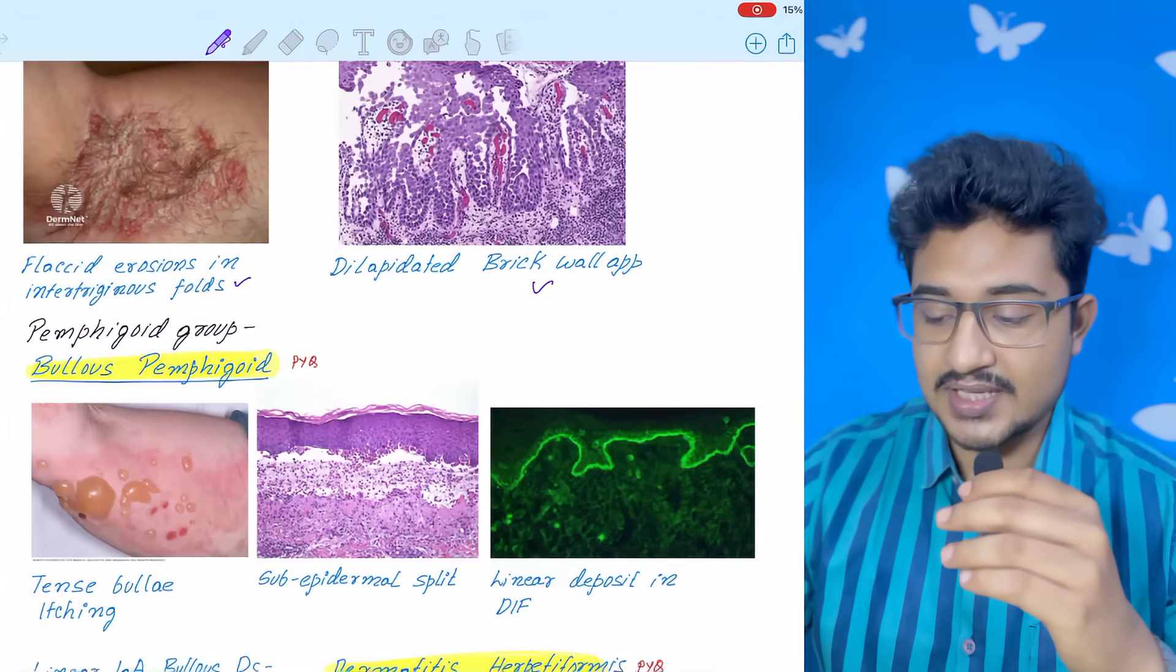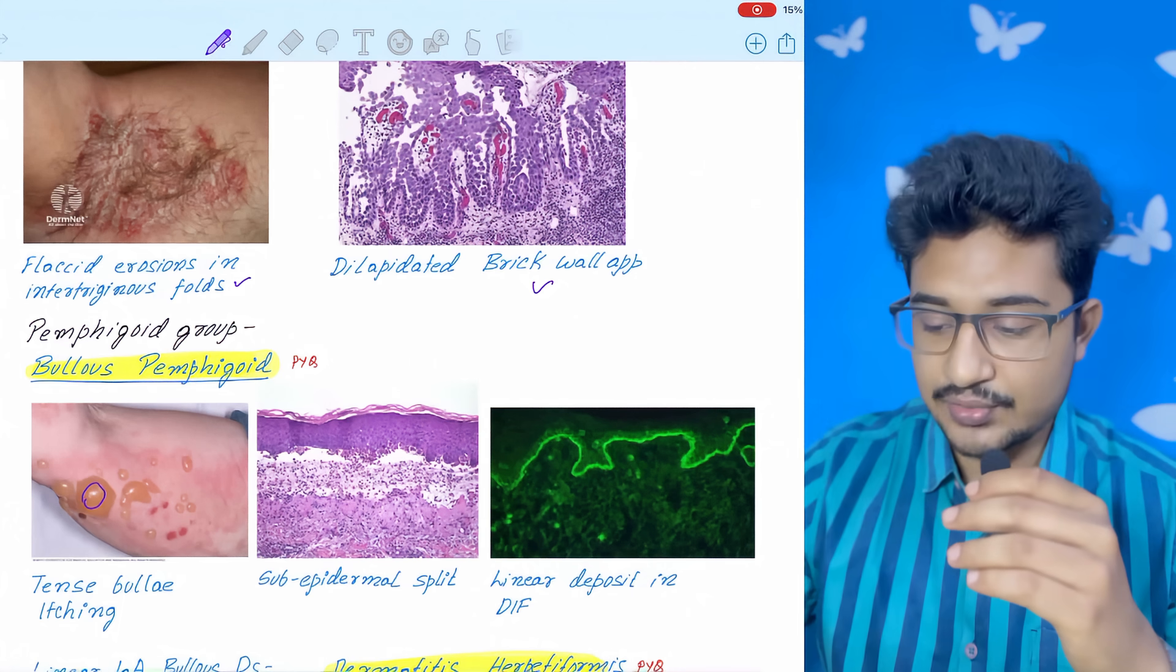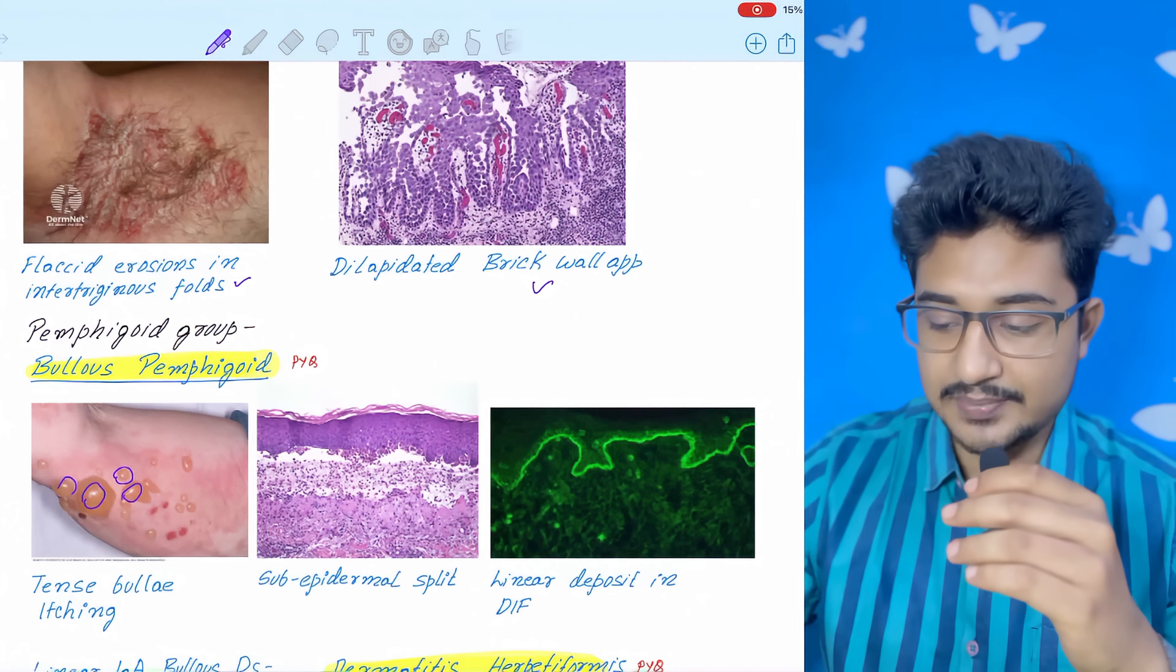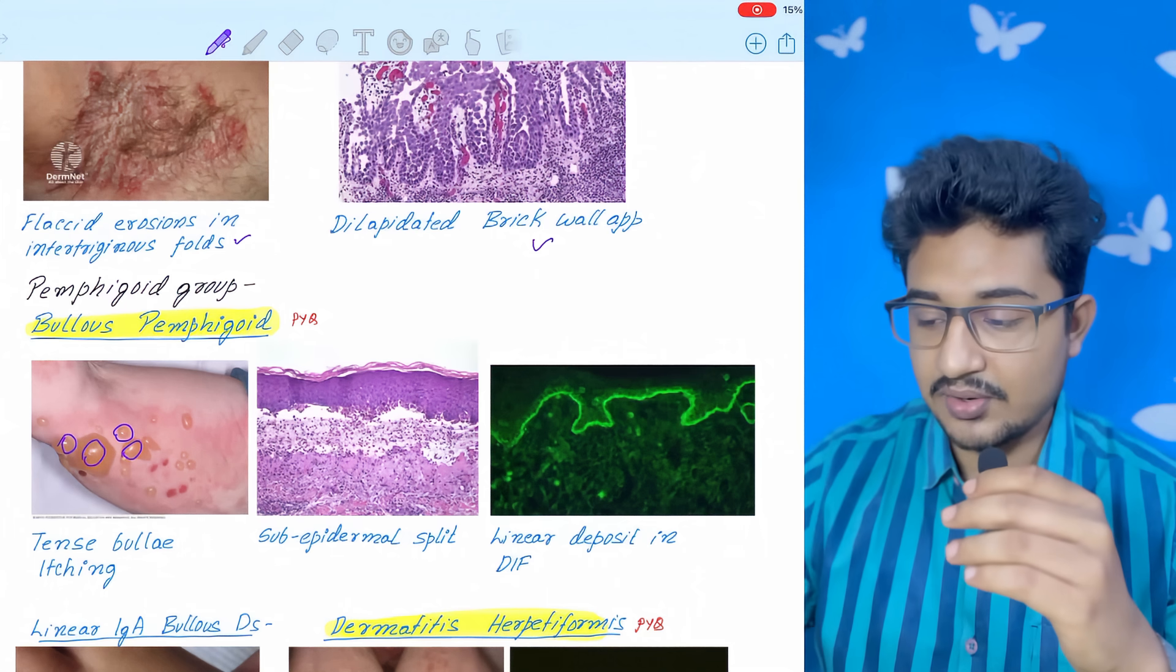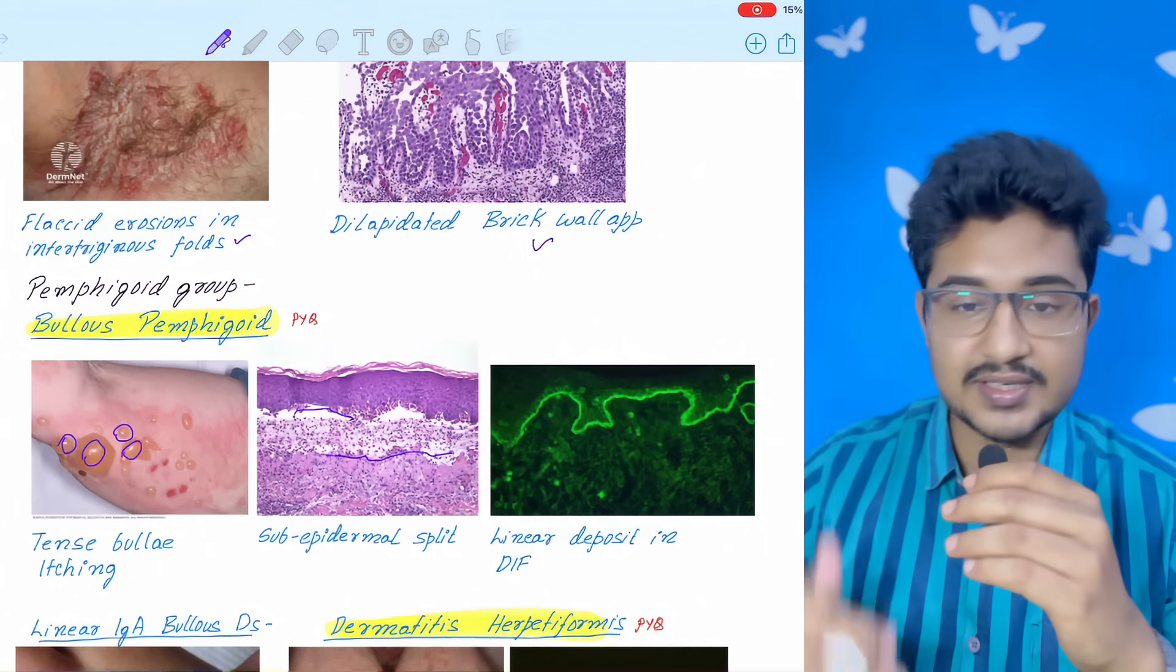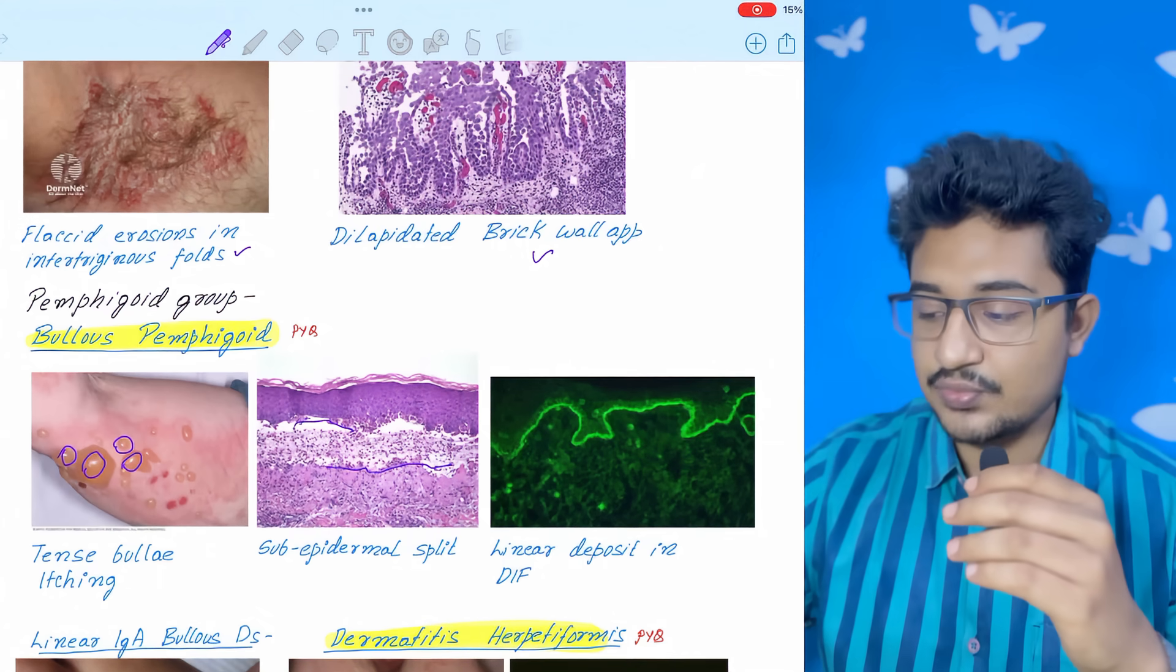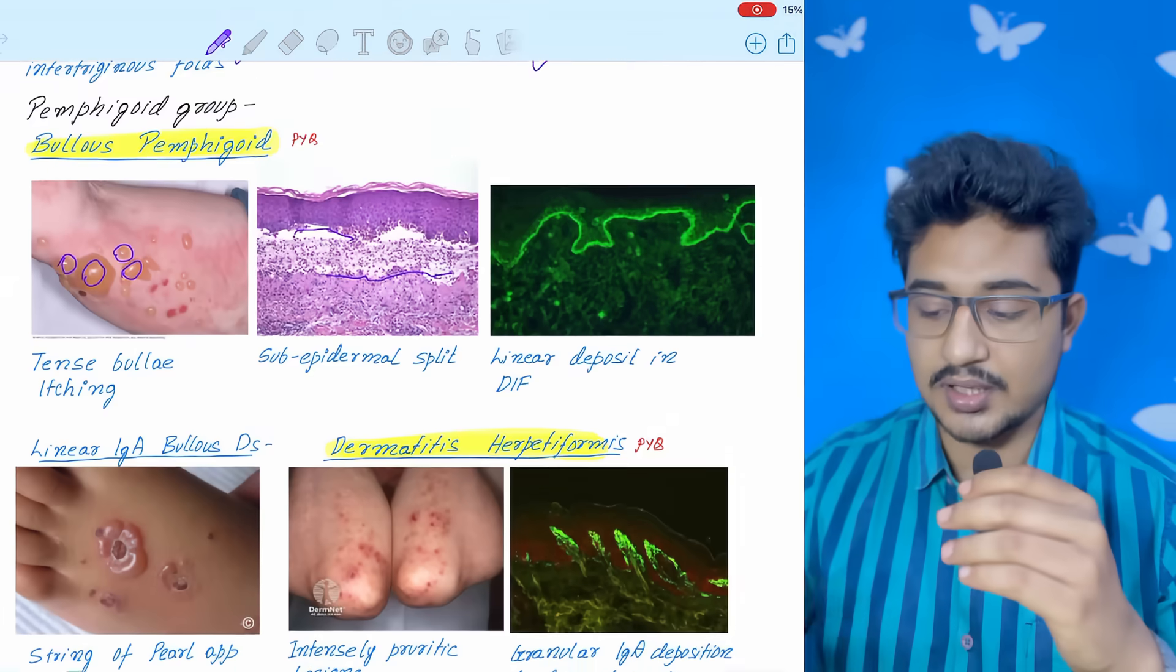Pemphigoid disorders. As in bullous pemphigoid, I told you to see the sign. Here you can see the shiny appearance, meaning these are tense bullae. History of itching will also be given. On examination you see the epidermis and dermis completely separated from each other. Here you will get linear deposition because the split is occurring at the dermoepidermal junction.